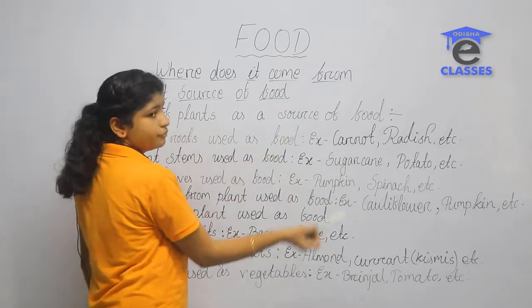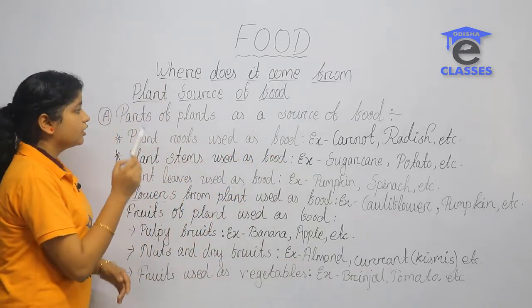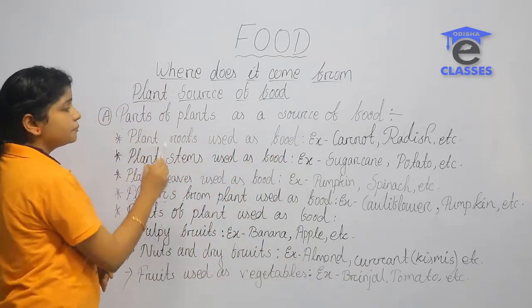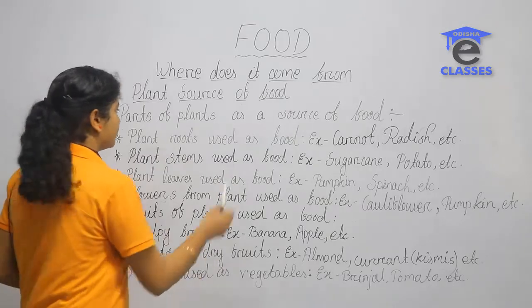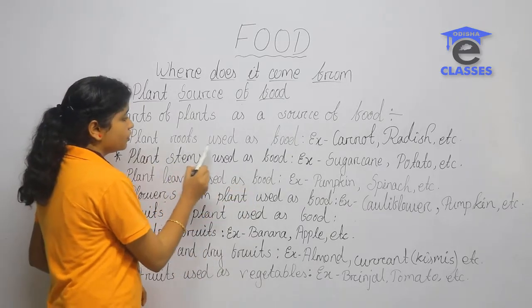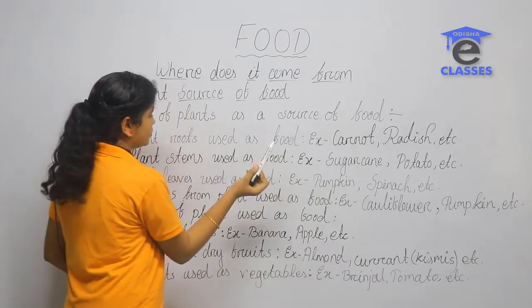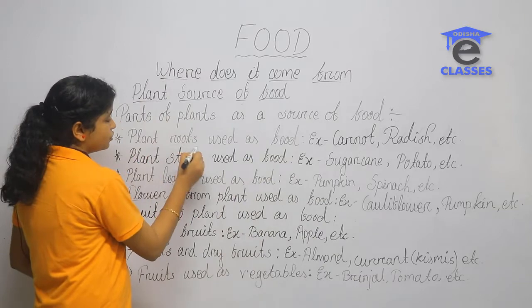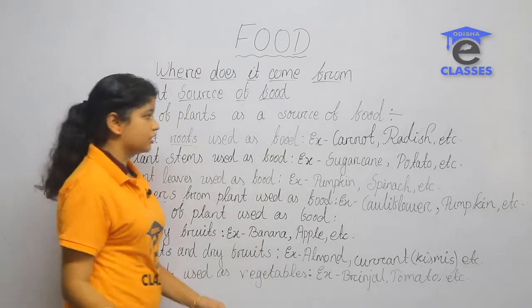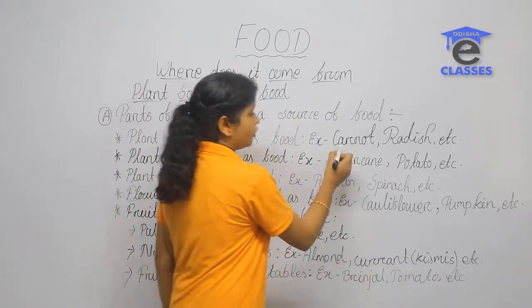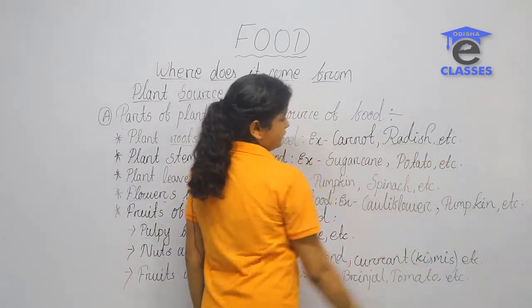Plants are a source of food. Different parts of plants are used as food. Roots of plants are used as food. For example, carrots, radish, etc.